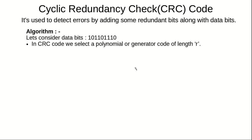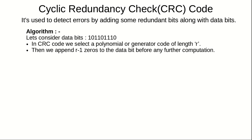The first thing we need to do is to select a polynomial or generating code of length R — it could be anything. After selecting that, we are going to append R minus one zeros at the end of the data.